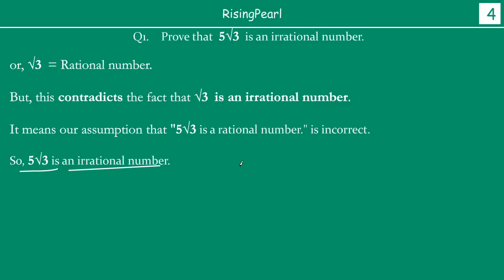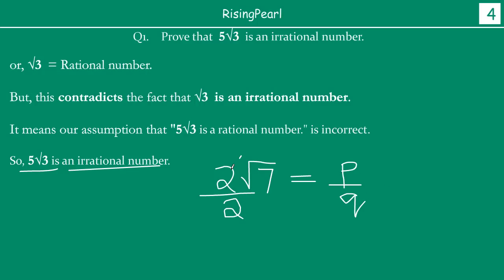It's important to note that if you had something like 2 square root 7, you assume it equals p by q and then divide both sides by 2 — because your goal is to get rid of the number in front of the square root term. Whatever is in front of the square root, divide both sides by that and proceed in exactly the same manner.